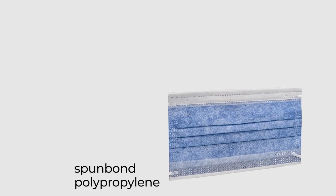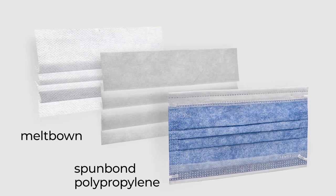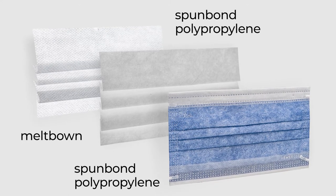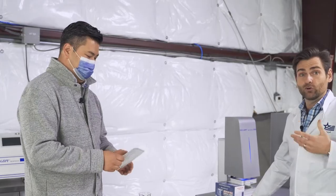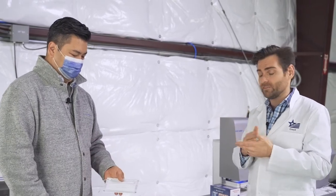Three layers. Outer layer of spun bond polypropylene, an inner layer of melt blown, and then another layer, outer layer of spun bond polypropylene. And that one goes by your face. So typically the outer layer of any mask that you see is going to be a color of some kind, and that's the one that's going to be on the outside, and then the one on the inside is typically going to be white, and that's going to go by your face. But they're actually the same exact type of material. It's exactly the same.